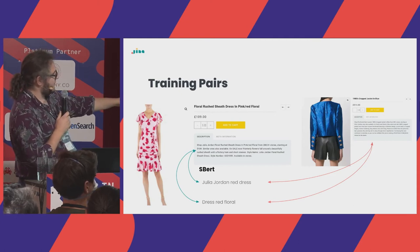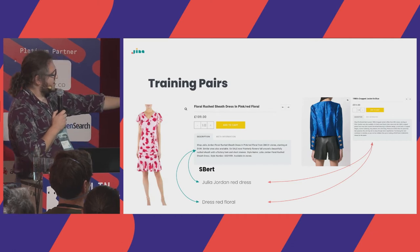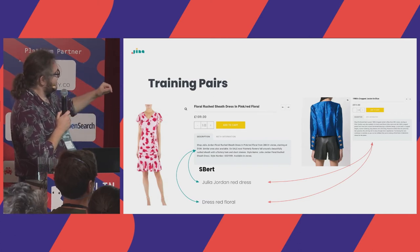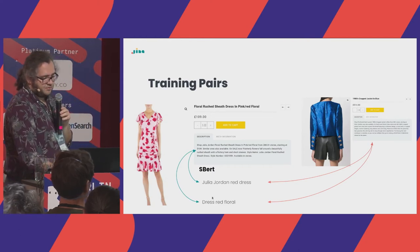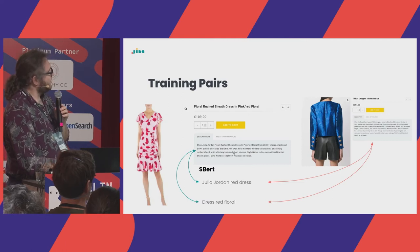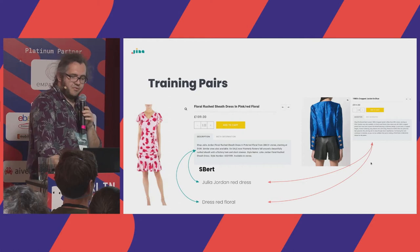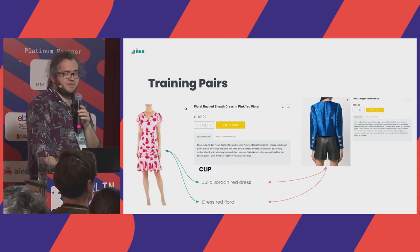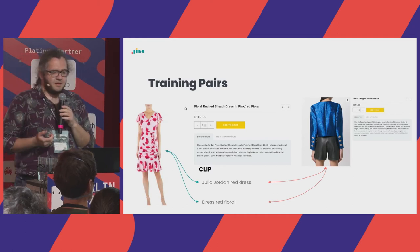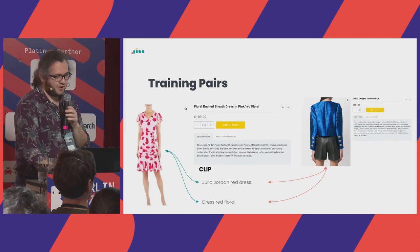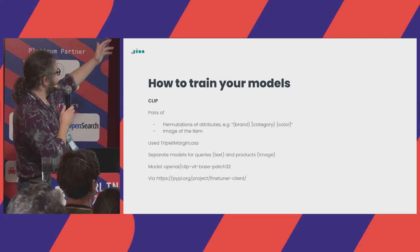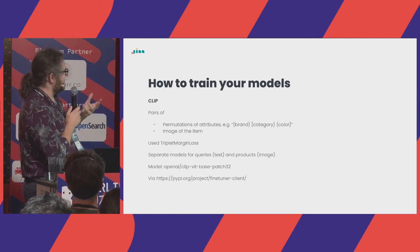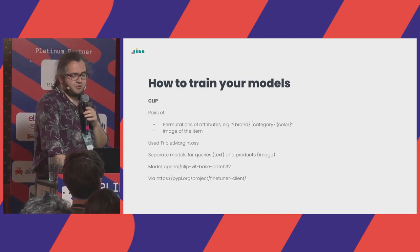To illustrate the query-document combinations: for example, 'Julia Jordan red dress' — Julia Jordan is a brand, red is color, dress is category — or 'dress red floral' for the same item. We use positive training examples where those queries should embed closely to the description, and negatives where queries should be far from wrong article descriptions. For CLIP it's the same approach but using images instead of text descriptions: permutations of attributes as queries, images of the item as the other side, triplet margin loss, and separate models for text and image input.